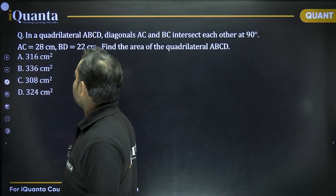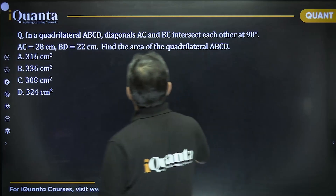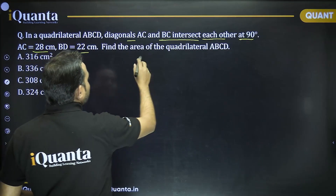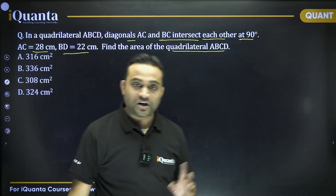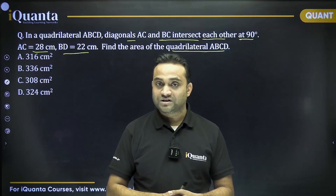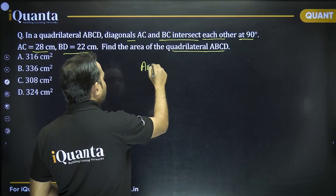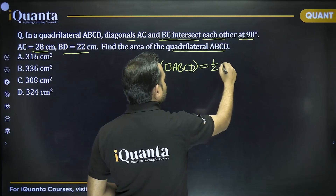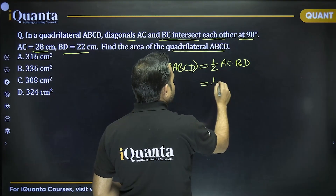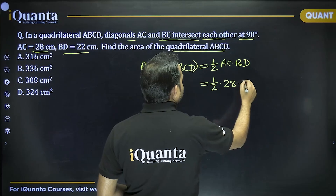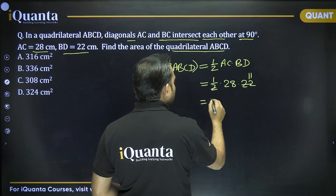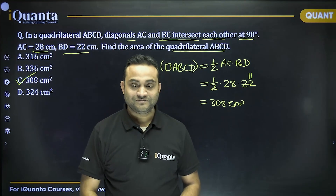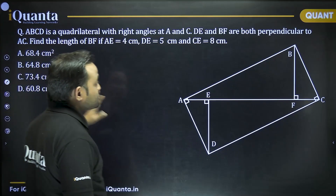Next question: in quadrilateral ABCD, diagonals AC and BD intersect at 90°. AC = 28 and BD = 22. Find the area of quadrilateral ABCD. We know that when diagonals are perpendicular, area = ½ × AC × BD = ½ × 28 × 22 = 14 × 22 = 308 cm². The answer is option C.